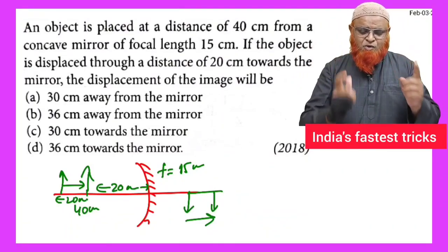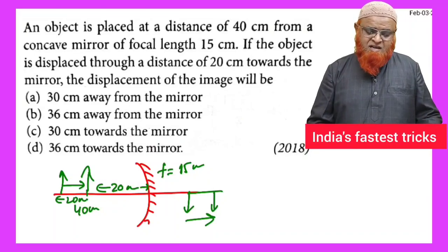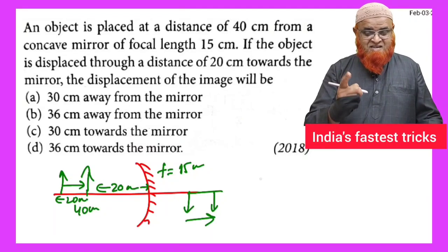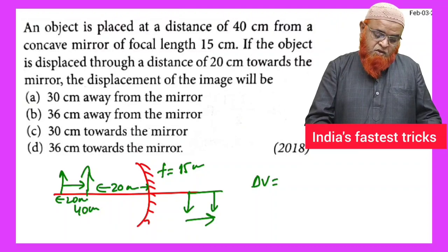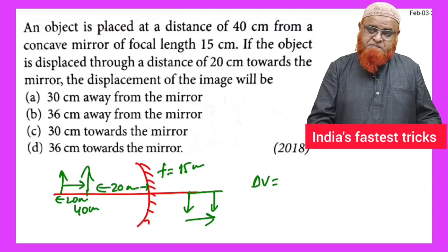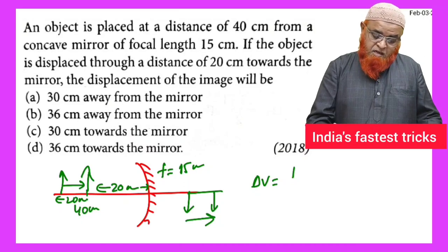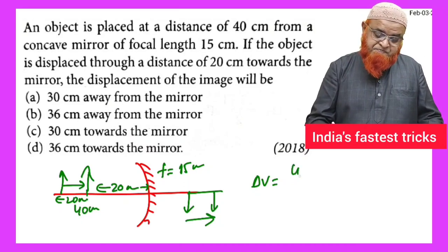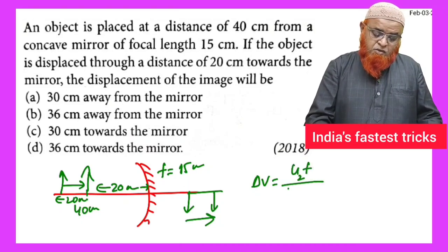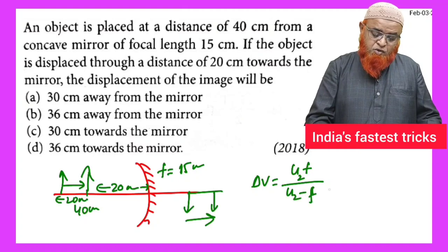For this I will give you a very wonderful shortcut. Delta v is nothing but u2 into f by u2 minus f, minus u1 into f by u1 minus f. This is today's shortcut for you.